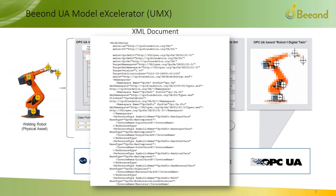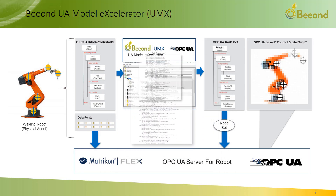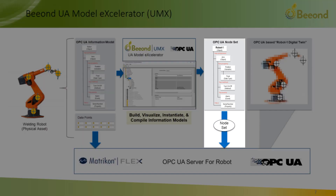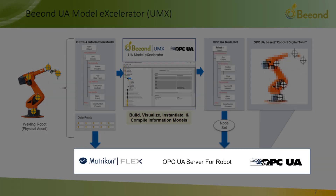UA information models are commonly defined using XML code, which is difficult to write, administer, and impossible to visualize — unless a graphical information modeling tool is used. BEYOND has developed an open source UA graphical information model editor named UA Model Accelerator. UMX is used to build, visualize, instantiate, and compile information models for OPC UA servers, eliminating the need to manually edit XML code. Once a model is instantiated, it is compiled to create a node set that is used by the OPC UA server to expose the data and services to OPC UA clients.